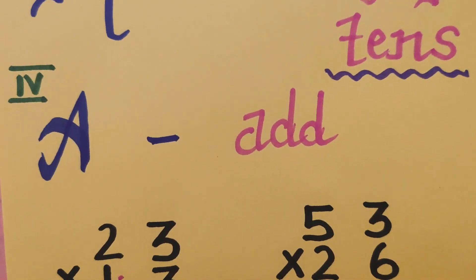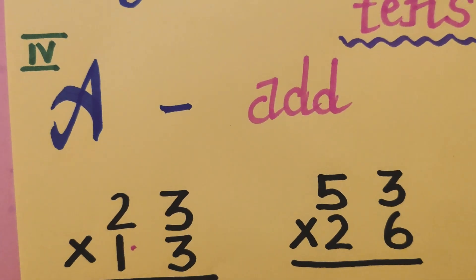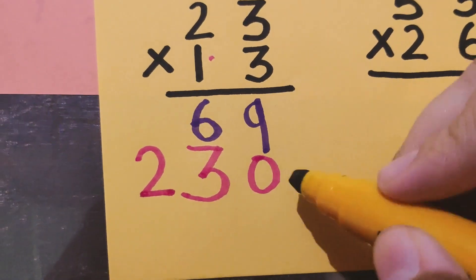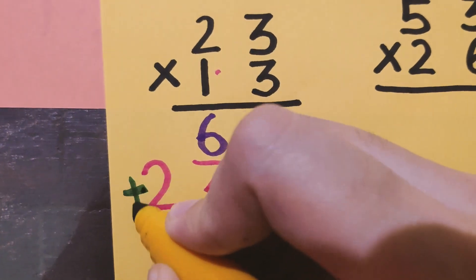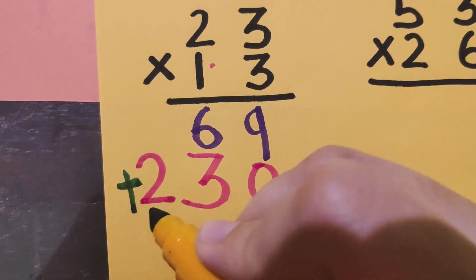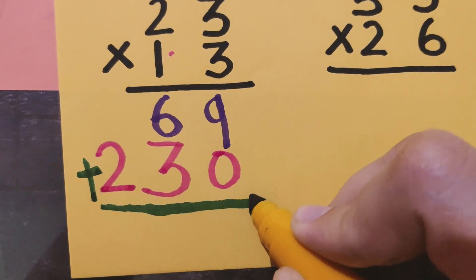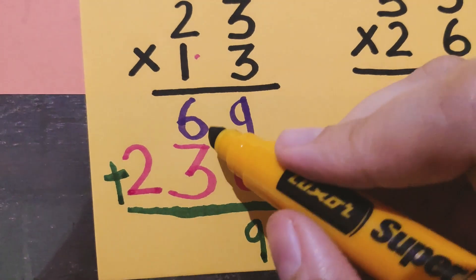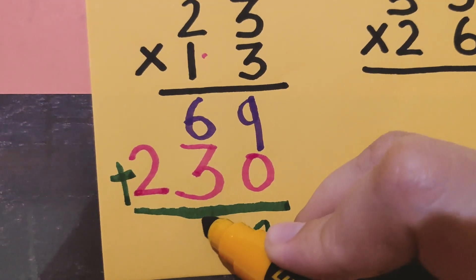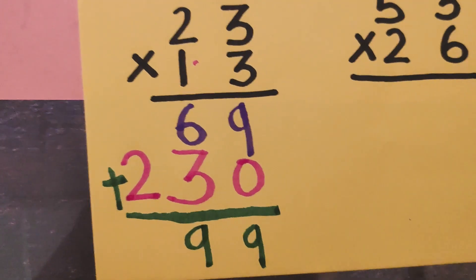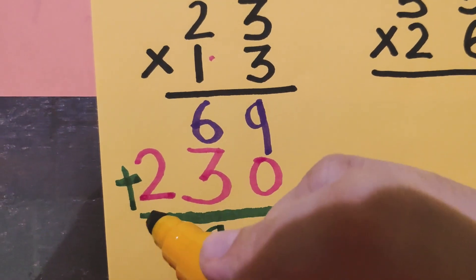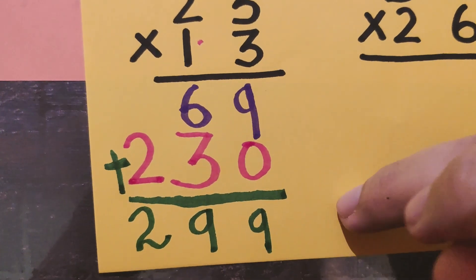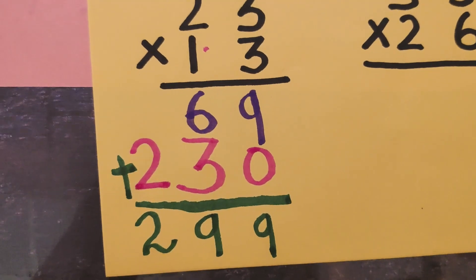Now the last step, A — A stands for addition. We add these two numbers. 9 plus 0 is 9, 6 plus 3 is again 9, and this is 2. So the answer is 299. Easy, isn't it?